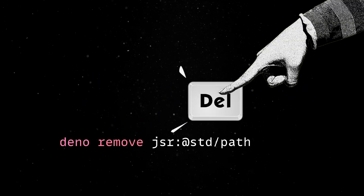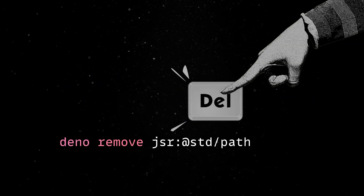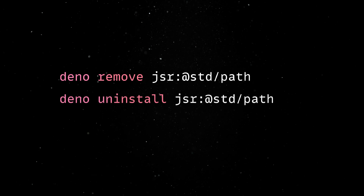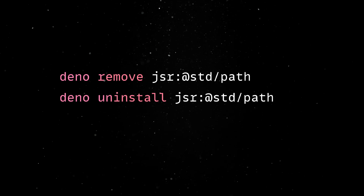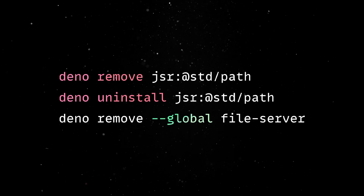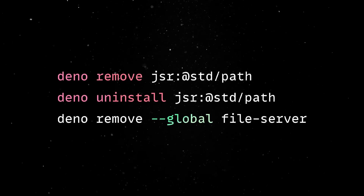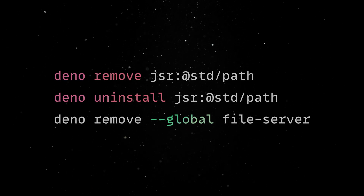The deno remove command deletes dependencies. You can use the uninstall alias as well, and the global flag should be used to remove globally installed binaries.